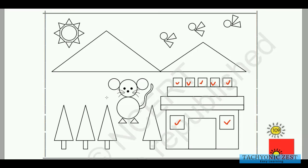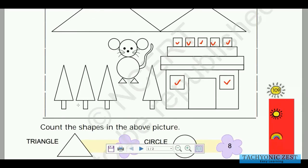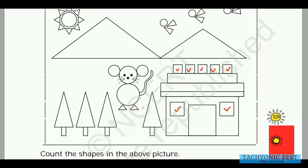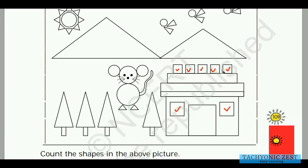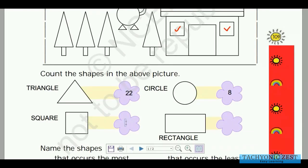Those shapes with unequal sides are rectangles and not squares, so we will not count them. Now let us count the squares we tick-marked: one, two, three, four, five, six, seven. We got a total of 7 squares.